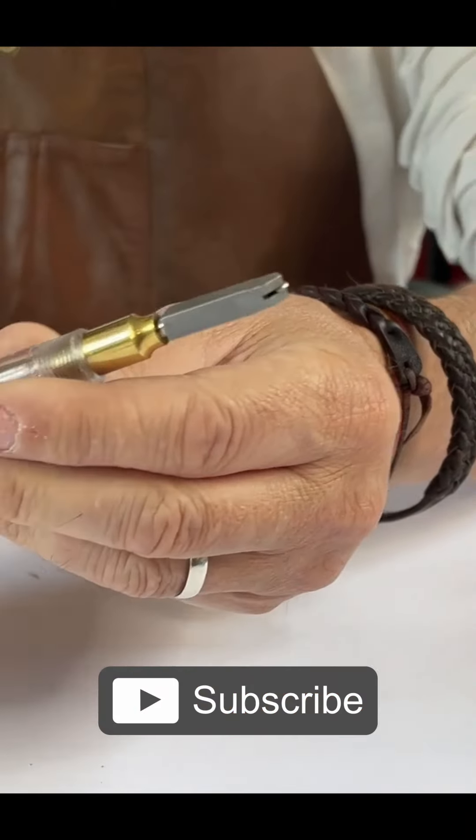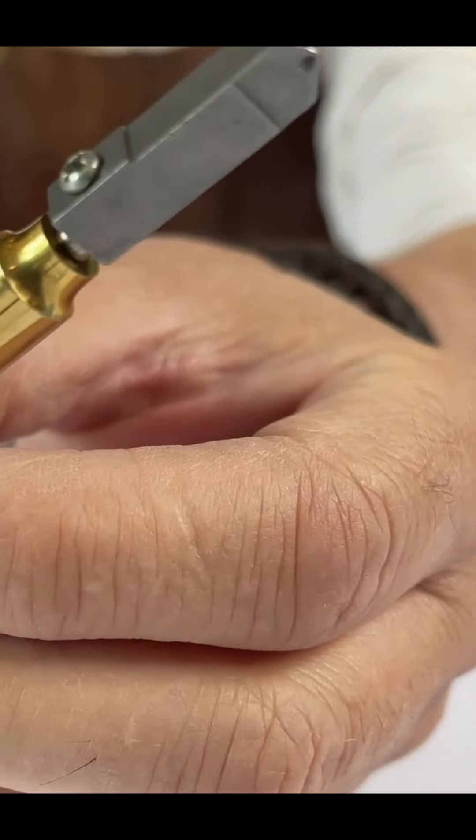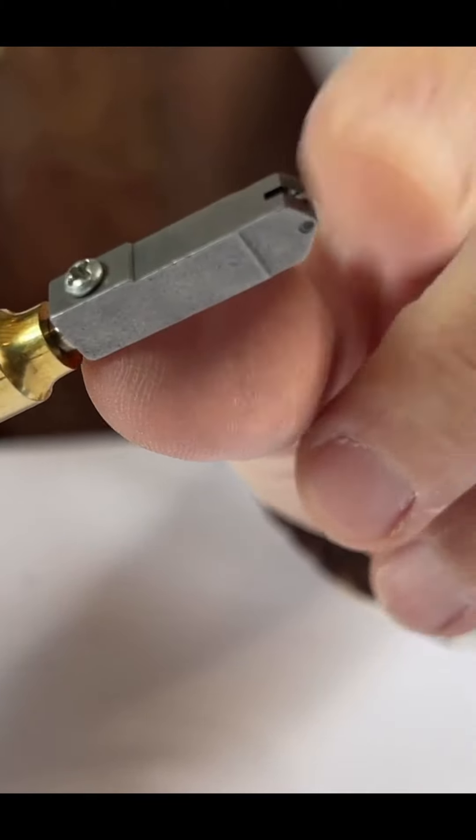So as you can see here, the glass cutter has a small wheel, a tungsten carbide wheel that sits in the front of the glass cutter like this.